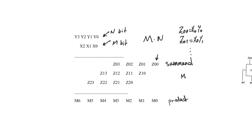For z00, m0 is just z00 directly — no addition needed. For m1, it's the sum bit of adding z01 and z10. These two bits need a half adder, which produces a sum bit that becomes m1 and a carryout that goes to the next column.